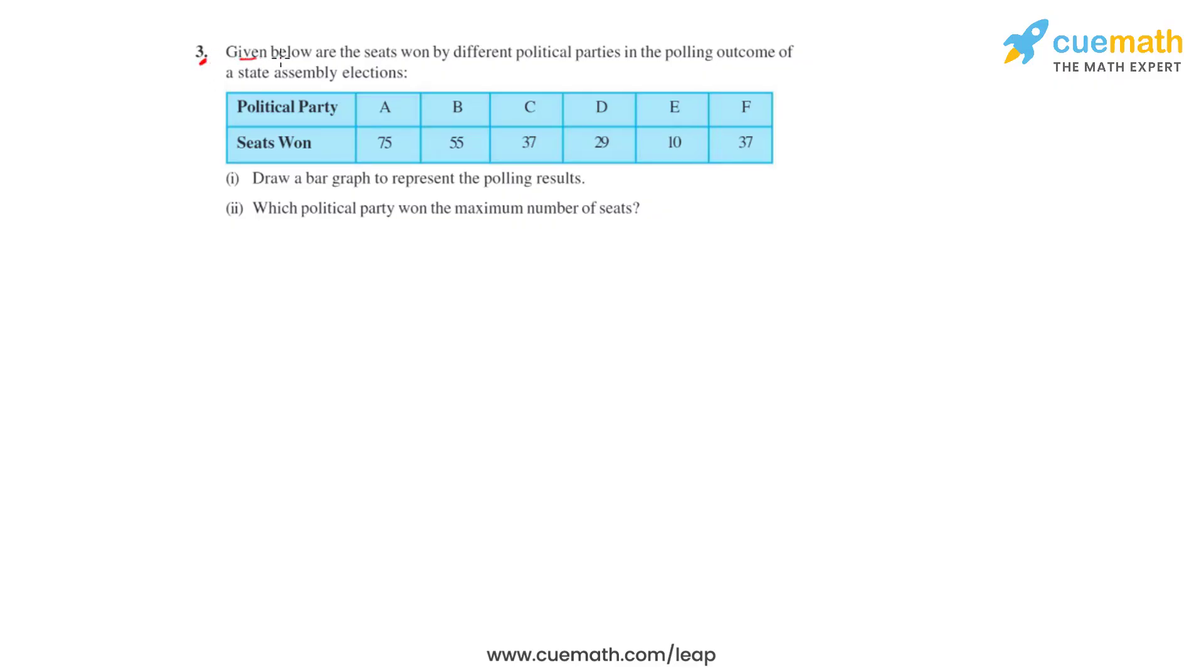Question number three: given below are the seats won by different political parties in the polling outcome of a state assembly election. We have been given political parties A, B, C, D, E, and F and the seats won by each of them. We have to draw a bar graph to represent the polling results and find out which political party won the maximum number of seats.